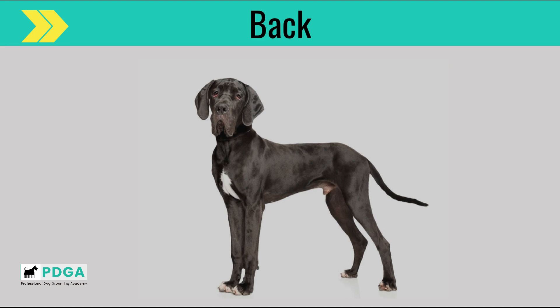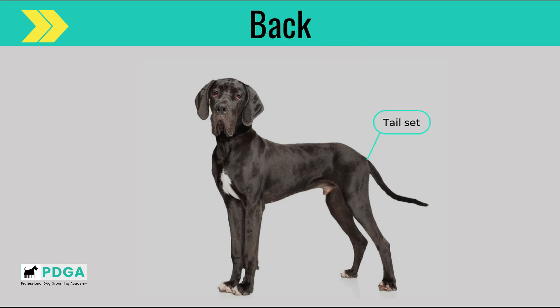We will now investigate the back section. The back starts at the point of the shoulders and ends at the ribcage. The loin is the area on the back that starts from the end of the ribcage to the beginning of the pelvic bone. The croup, or also referred to as the rump, is the proverbial rear end — this is where the pelvis bone is located. The tail set is where the tail joins the rump. The flank refers to the side of the dog, both sides of the abdomen, just in front of the rear legs.